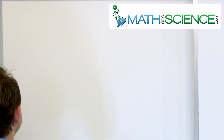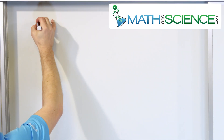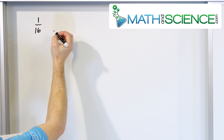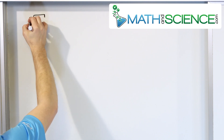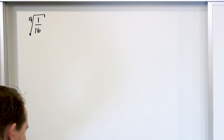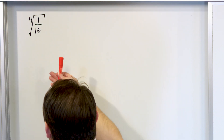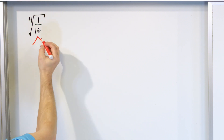We're going to start with something relatively easy. What if we have 1/16 — that's a fraction, so it looks a bit ugly — but we're going to take the fourth root of that. How do we do it? We're going to learn how to deal with fractions and radicals more later, but for now just try to do a factor tree.